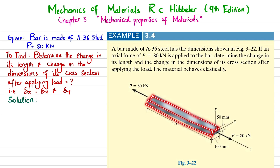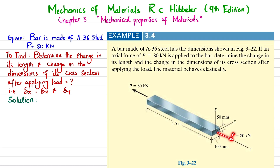The bar's length is 1.5 m in the z-direction, its width is 100 mm, and its thickness is 50 mm. The load P is applied in the z-direction. We need to determine: the change in length in the z-direction, and also — since the load will reduce both the thickness and the width — the change in dimension in the y-axis direction and in the x-axis direction.